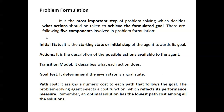Initial state is the starting state. Actions refer to what possible actions are available. The transition model describes what each action does. Goal test identifies whether the current situation has reached the goal state. Cost — it reflects the performance measure, and the optimal solution should have the lowest cost among all solutions.